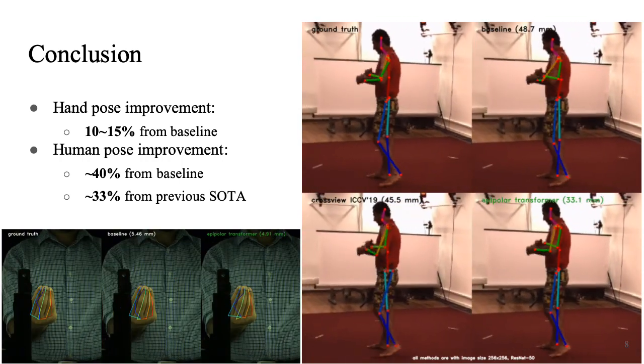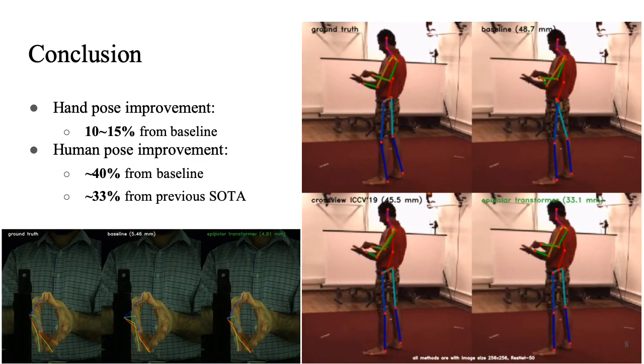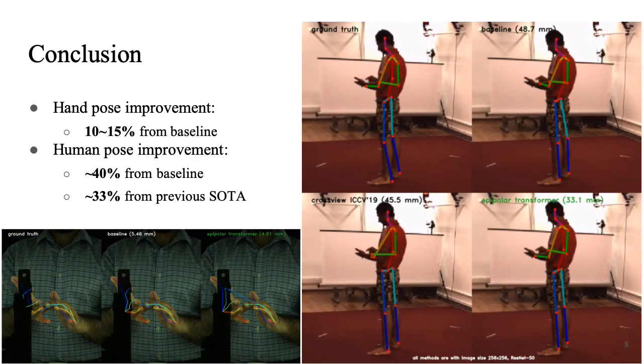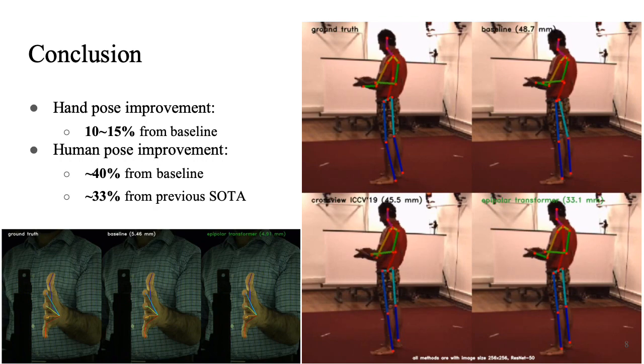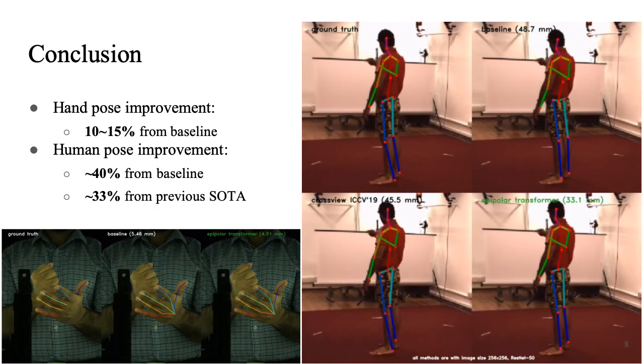As a quantitative result, on our hand dataset, we can consistently outperform the baseline by 10 to 15 percent. And on the HUMAN 3.6M dataset, our improvement is even more significant.